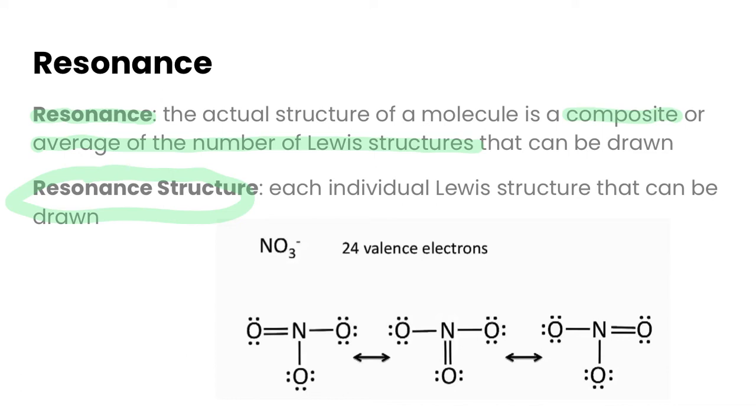Looking at our example here, if we take our nitrate ion, then we can actually draw out our Lewis structures so that the double bond is in three different locations. So it could be double bonded between that nitrogen and oxygen, that one or that one. In fact what actually happens is we've kind of got an average of all of these three.